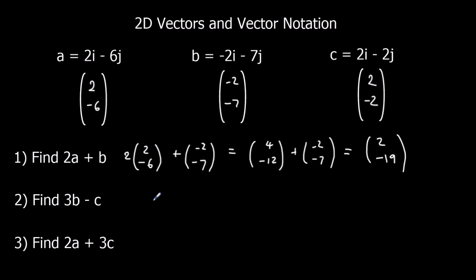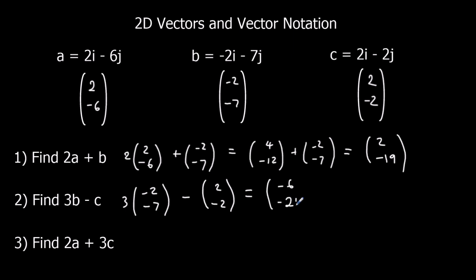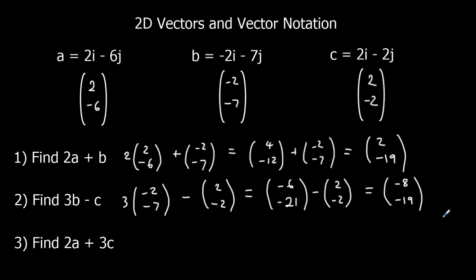For 3B minus C: 3 of the (-2,-7)'s, minus (2,-2). That gives (-6,-21) minus (2,-2). Top line: -6 minus 2 is -8. Bottom line: -21 minus negative 2, which means plus 2, so -21 plus 2 is -19. So the answer is minus 8i minus 19j.